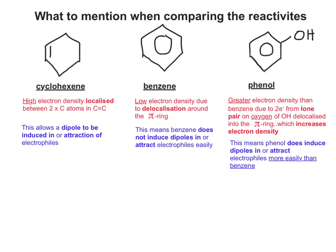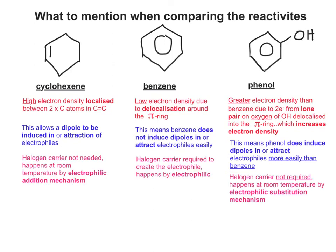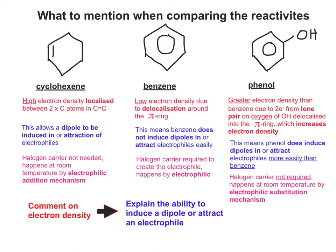What we're looking at in blue are the chemical consequences of the electron density. In cyclohexene, this allows a dipole to be induced in, or attraction of, electrophiles. In benzene, it means it doesn't induce dipoles or attract electrophiles easily. In phenol, it induces dipoles or attracts electrophiles more easily than benzene. Finally, we can say how it's going to happen: halogen carrier not needed, reaction at room temperature by electrophilic addition for cyclohexene. For benzene, a halogen carrier is required to create the electrophile, and it happens by electrophilic substitution. For phenol, a halogen carrier is not required, it happens at room temperature, but still by electrophilic substitution.